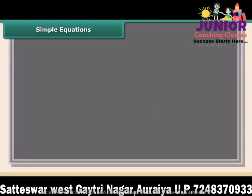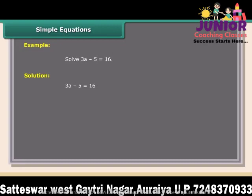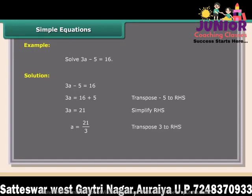Simple equations — Example: Solve 3A minus 5 equals 16. Solution: 3A minus 5 equals 16. Transpose minus 5 to RHS: 3A equals 16 plus 5 equals 21. Transpose 3 to RHS: A equals 21 upon 3 equals 7.